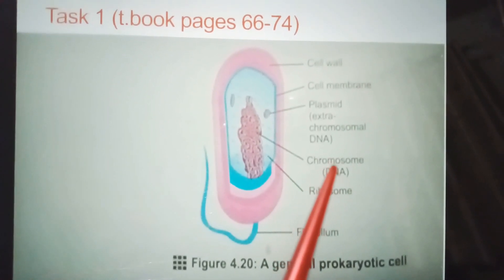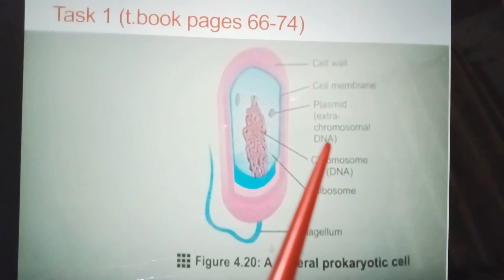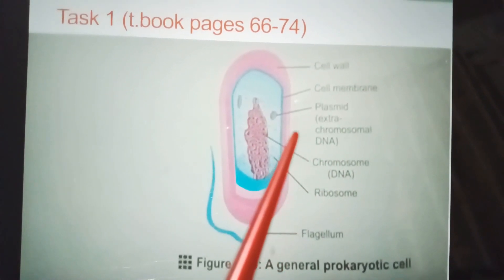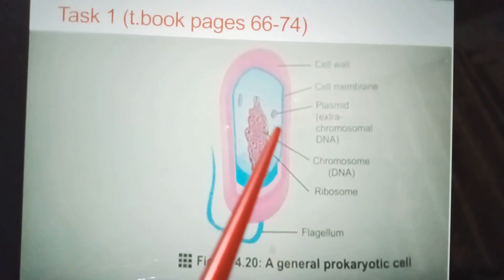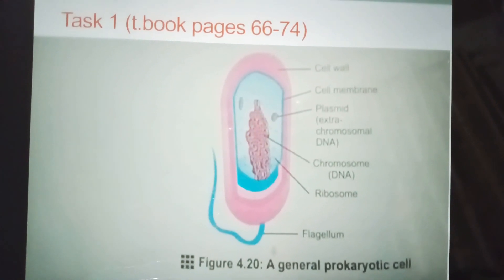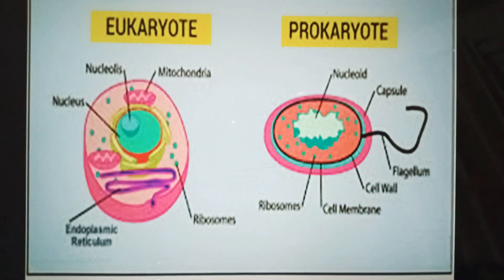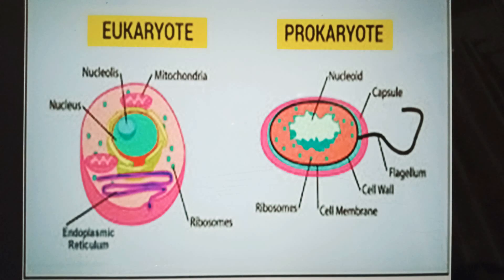Now I will describe the difference between a prokaryotic cell and the eukaryotic cell. Eukaryotic cells have prominent nucleus bounded by a nuclear envelope, while prokaryotic cells do not have prominent nucleus.